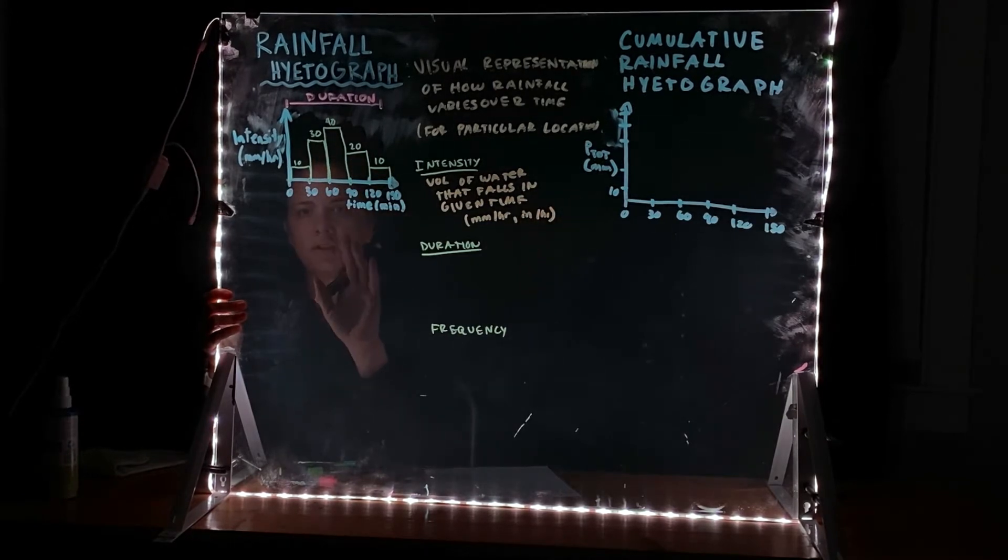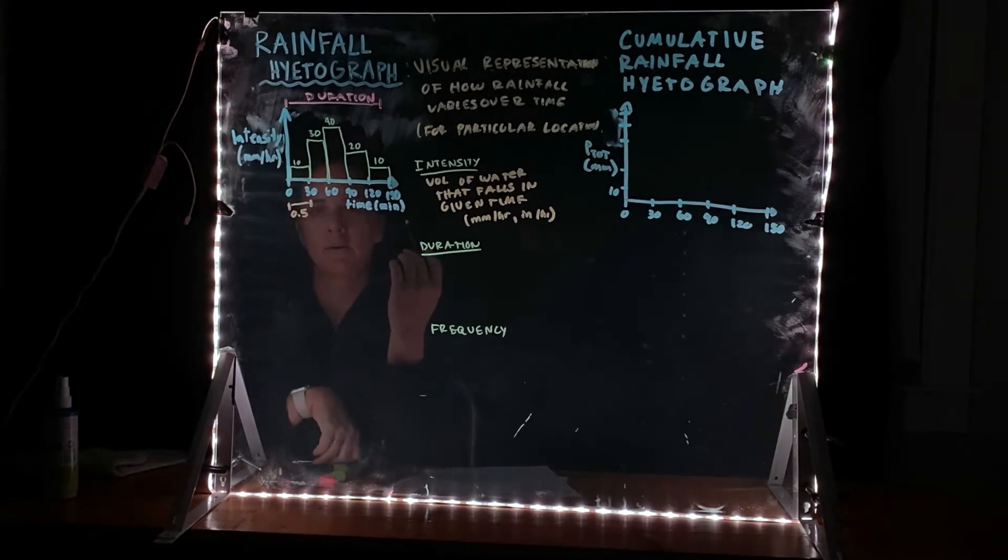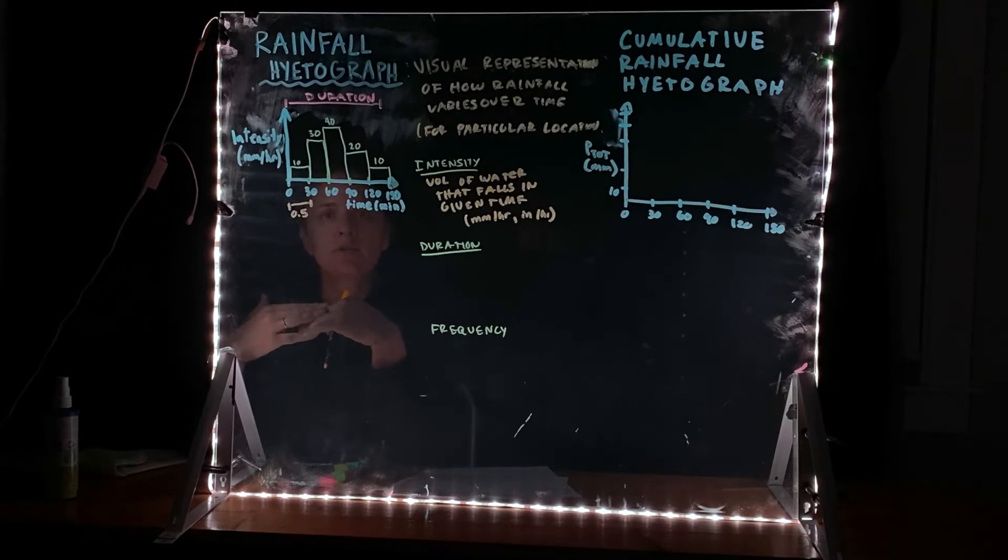And you'll notice here on this hyetograph example that I've provided, I've given a time of 0.5 hours or 30 minutes, but my intensity is still given in millimeters per hour. So you see here in the first 30 minutes or half an hour, I have an intensity of 10 millimeters per hour, which means that in that first 30 minutes of the storm passing through, there were five millimeters of rain that fell. And this is measured using those measurement techniques that we previously covered.